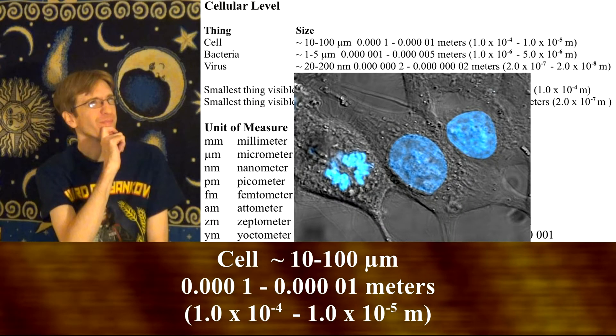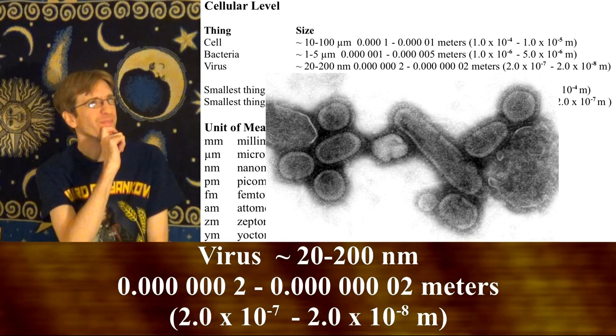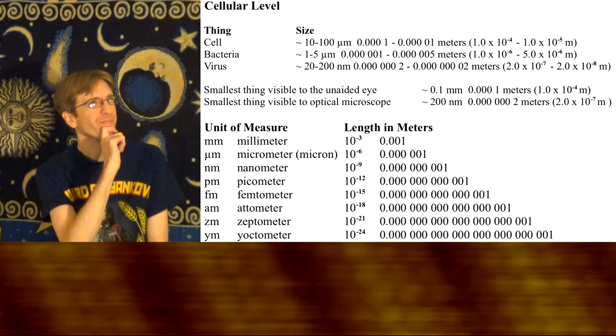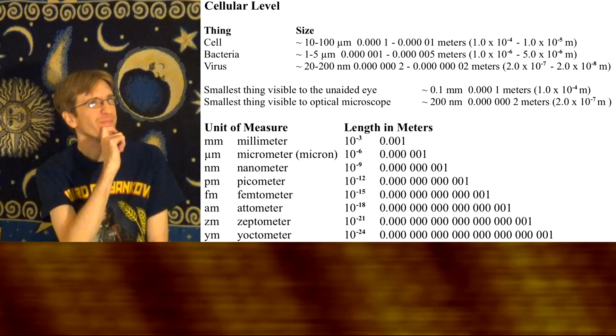Cells range in size from about 10 to 100 microns. Most bacteria are about 1 to 5 microns in size, and viruses can be as big as 200 nanometers and as small as 20 nanometers. There are many different types of cells, bacteria, and viruses, all with various shapes and sizes.